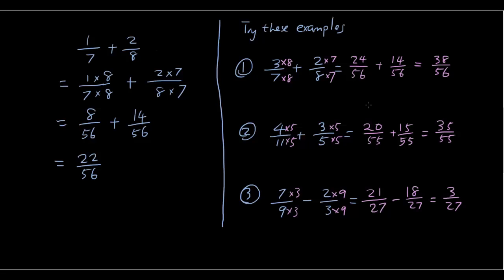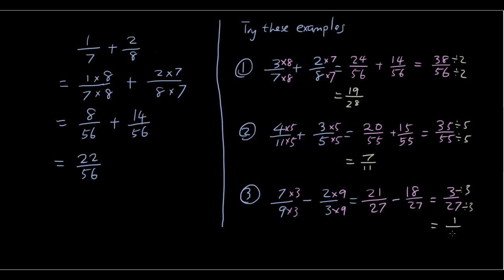Notice how all of these fractions can be simplified further, so we're going to do that to follow mathematical convention. For thirty-eight over fifty-six, both are even numbers, so we divide by 2 to get nineteen over twenty-eight. For the second one, we divide both by 5 to get seven over eleven. And for the third one, we divide both by 3 to get one over nine.